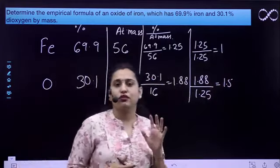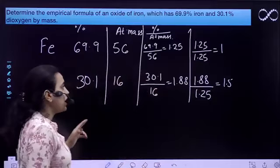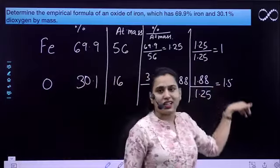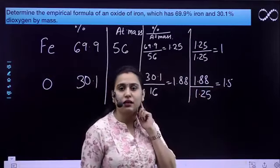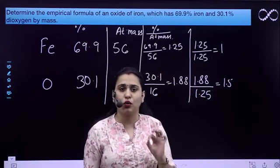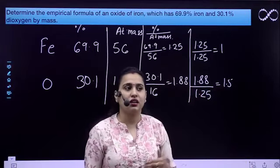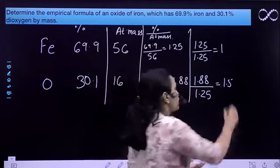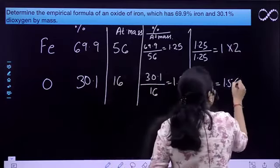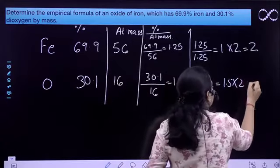Agar haam kabhi ko hi formula likte hai, toh usse hum points mein nahi likte hai. That is why we will multiply these number by the same whole number, so that it can be in some whole number. So, multiplying this by 2 and this by 2, it will give 2 and it will give 3.